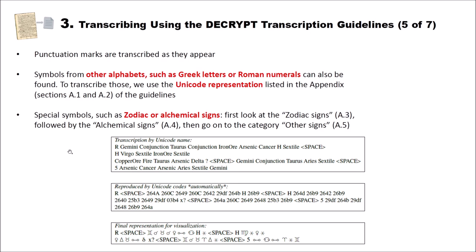Punctuation marks are transcribed as they appear — when you see a dot or comma, you transcribe these since they could be very important. Digit ciphers are quite easy to transcribe since we only have digits from zero to nine, maybe with a dot on top. But many original historic ciphers use different alphabets, for instance Greek alphabet or Roman numerals. For such symbols we use Unicode representations, which are listed in appendix sections A1 and A2 of the guidelines. Special symbols such as zodiac or alchemical signs can also be found there — zodiac in appendix 3, alchemical signs in appendix 4, and other signs in A5.